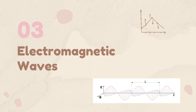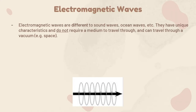Moving away from sound waves completely, we now look at electromagnetic waves. These are significantly different from sound waves or ocean waves. The key differentiating factor is that electromagnetic waves do not require any medium to travel through — they can propagate through a vacuum. A very easy example is UV radiation from the sun, which travels through space needing absolutely no medium. Visible light is another example of electromagnetic waves.